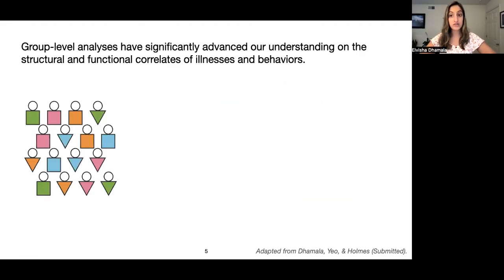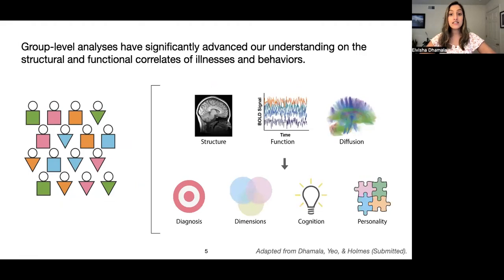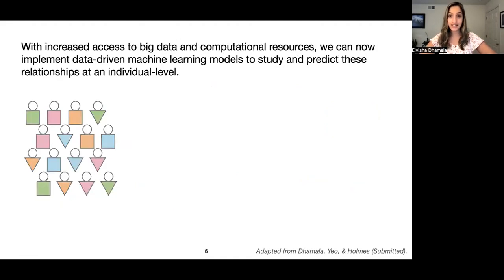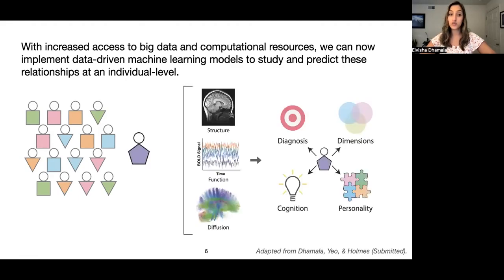Traditionally, these relationships have been studied at a group level to identify differences between populations, such as healthy and patient groups, males and females, or children and adults. These analyses have led to monumental advances in our understanding of the structural and functional correlates of illnesses and behaviors. But with increased access to computational resources and large publicly available datasets, we can now implement data-driven machine learning predictive models to better understand these relationships at an individual level.